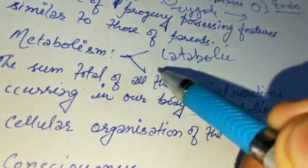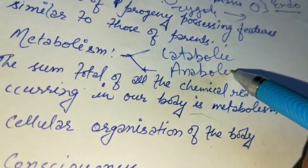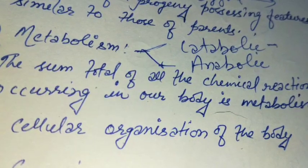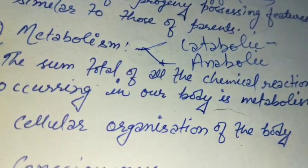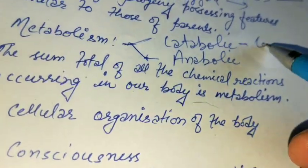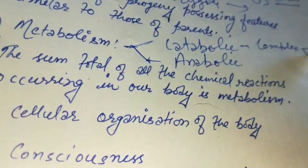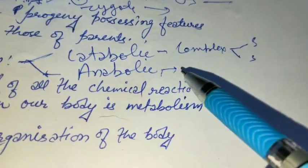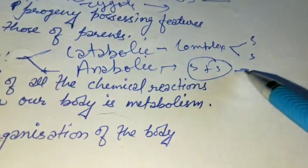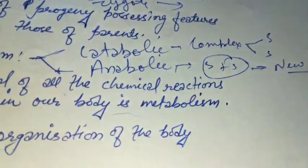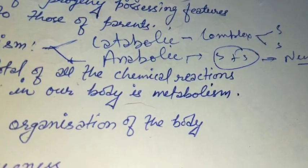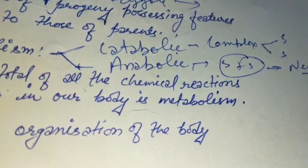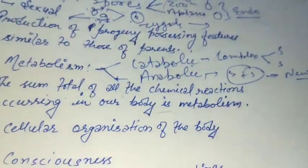Metabolic reactions are of two types: catabolic and anabolic. In anabolic reactions, simple molecules are combined to form a complex molecule. In catabolic reactions, a complex molecule is broken down into simple molecules. No non-living object exhibits metabolism.